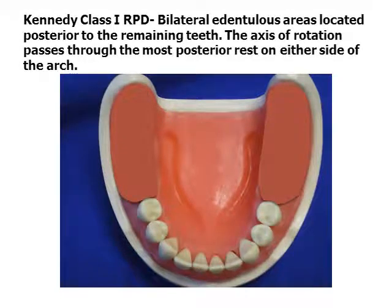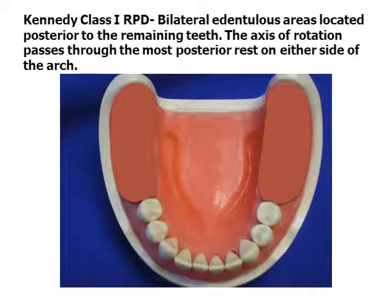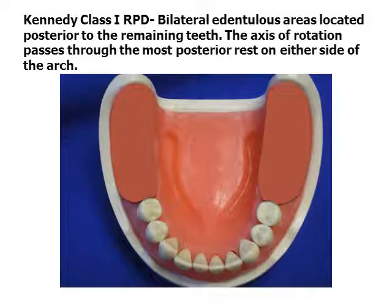This video describes a template for designing the clasp-retained Kennedy Class 1 removable partial denture. The Kennedy system of classification uses Applegate's rules to describe four types of arch forms. The partial denture can be described as either all tooth-supported or tooth-tissue supported. The tooth-tissue supported partial denture will have an axis of rotation which runs to the most posterior rest on each side of the arch, requiring special consideration in the selection of partial denture components.